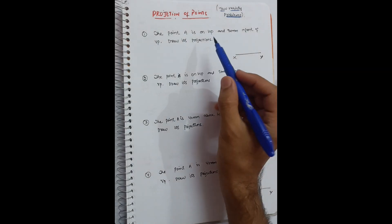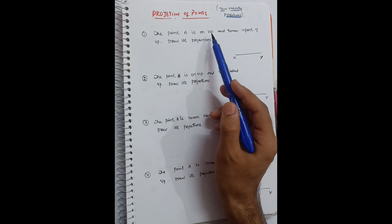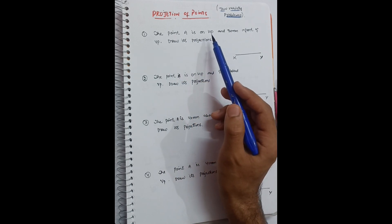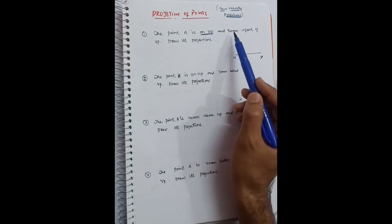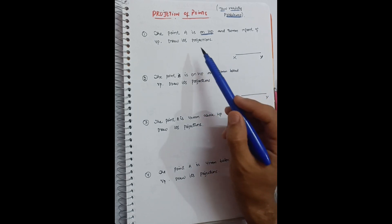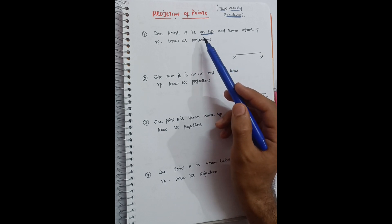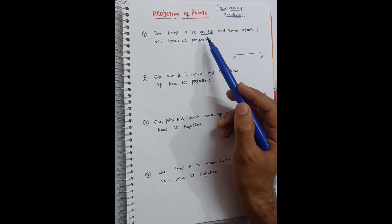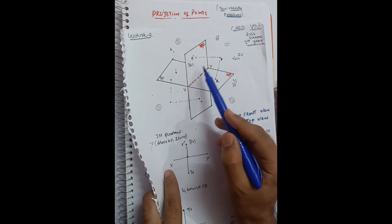You may see these types of problems in examinations. The problem states: point A is on HP and 30 mm in front of VP — draw its projections. In previous videos we discussed above HP, below HP, behind VP, in front of VP. The term 'on HP' is new here. You have to remember: whenever a point is on HP or on VP, you draw that point on the reference plane, that is the XY plane, as seen in the 3D model.